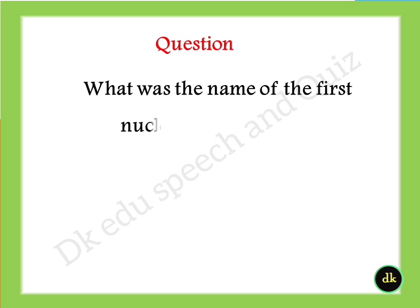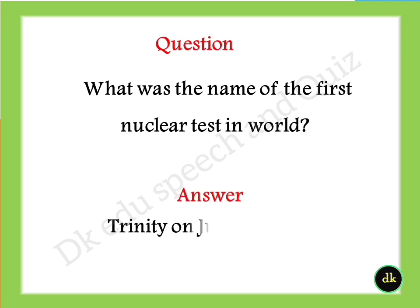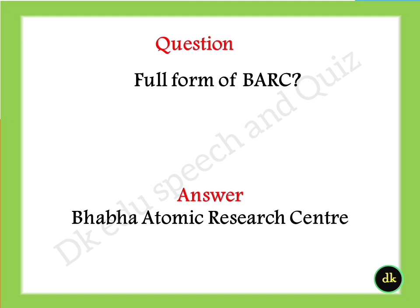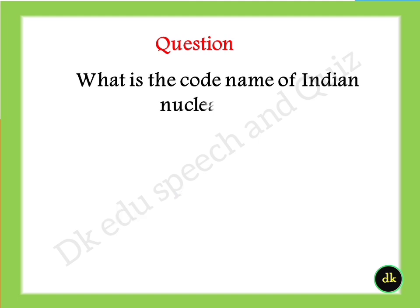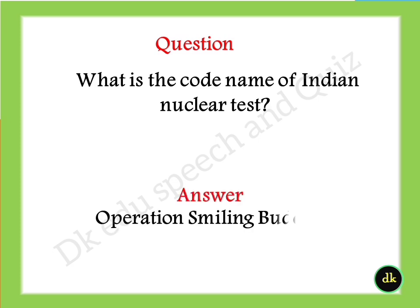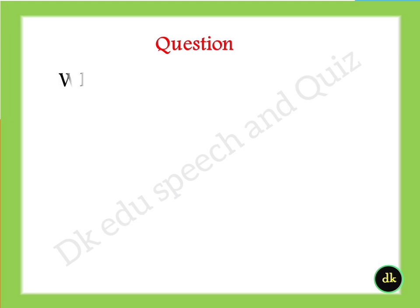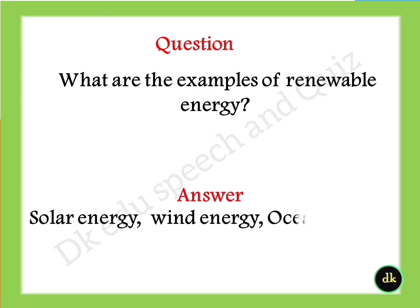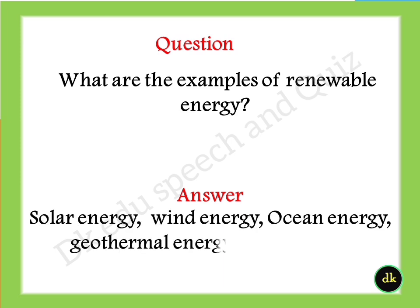Brown energy is also known as brown power — it comes from fossil fuels such as gas, coal, and oil. What was the name of the first nuclear test in the world? Answer: Trinity, on July 16, 1945. Full form of BARC? Answer: Bhabha Atomic Research Centre. What is the code name of India's nuclear test? Answer: Operation Smiling Buddha. What are the examples of renewable energy? Answer: solar energy, wind energy, ocean energy, and geothermal energy.